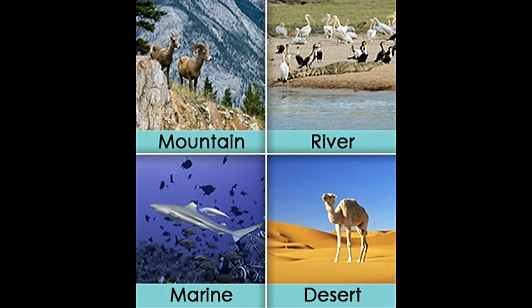Apart from this, another class of organisms called detritivores, for example fungi and bacteria, exist in every ecosystem, which help in the decomposition and degradation of dead organisms. This helps in releasing nutrients back to the earth's surface, wherein the cycle starts again. Energy is transferred from the lower to the higher levels, as the complexity goes on increasing.